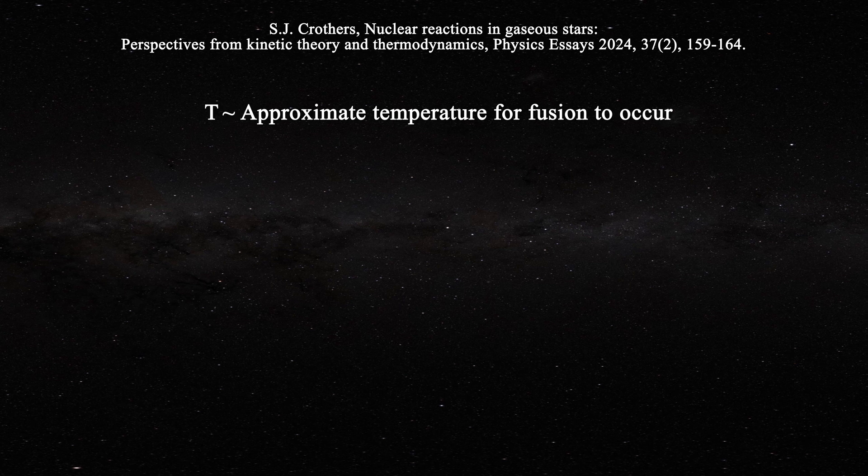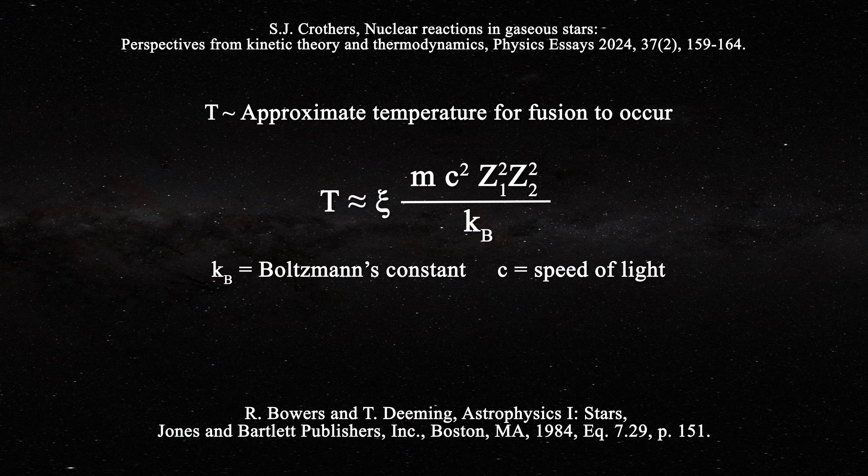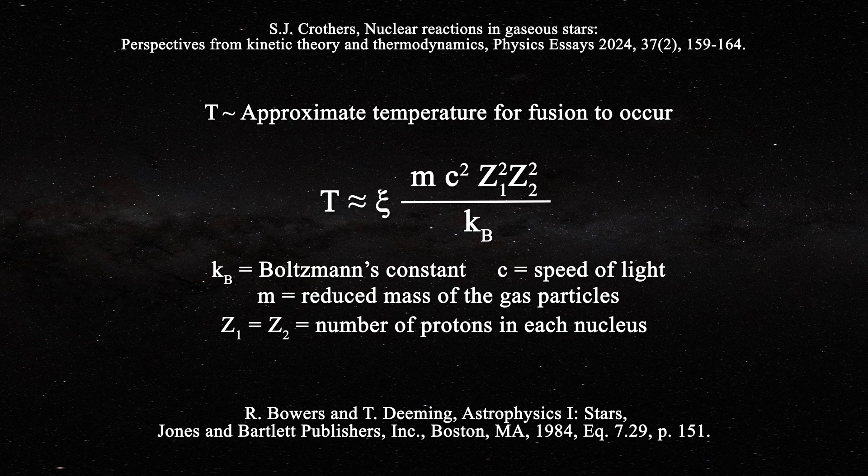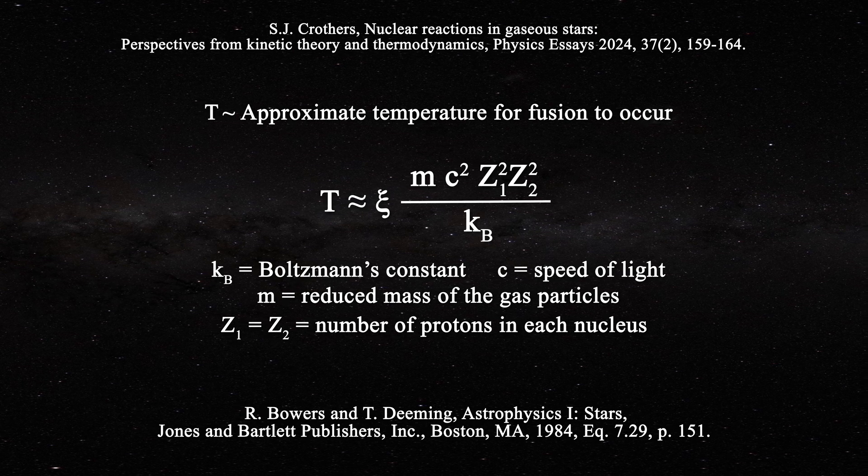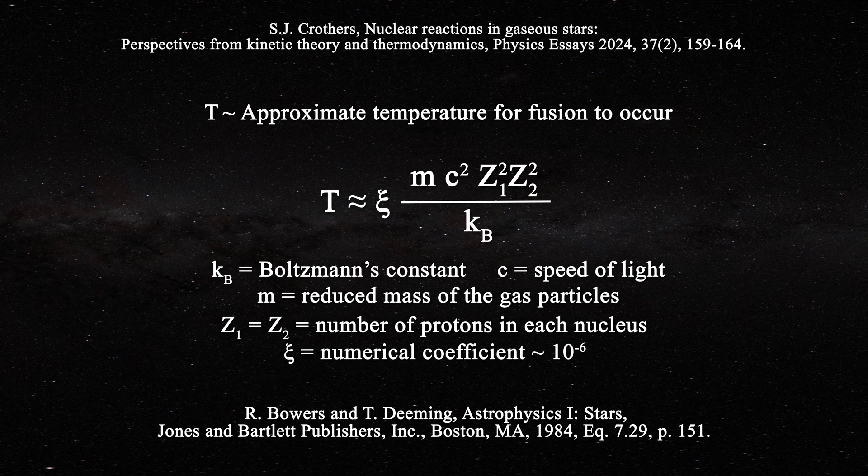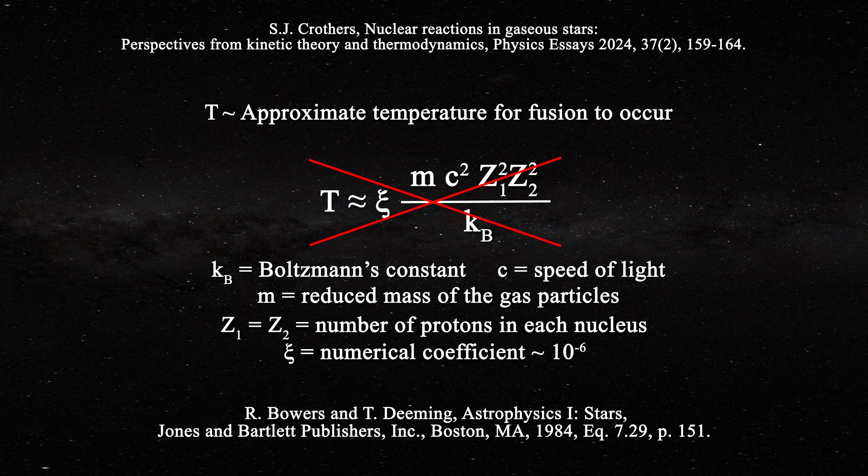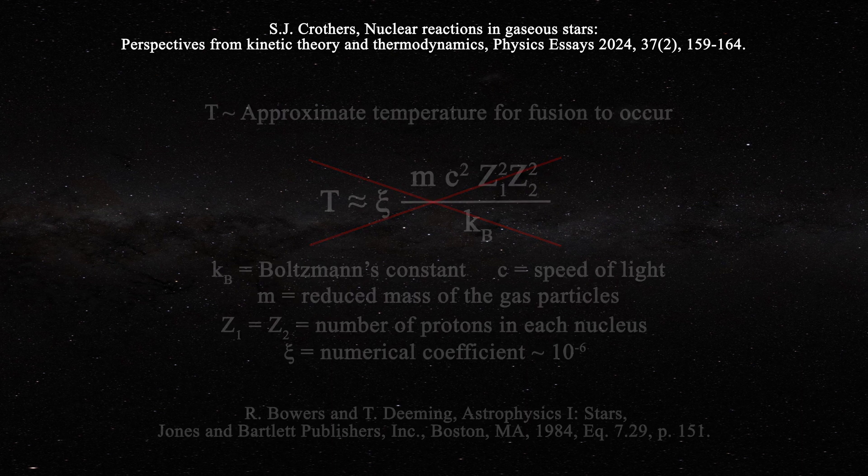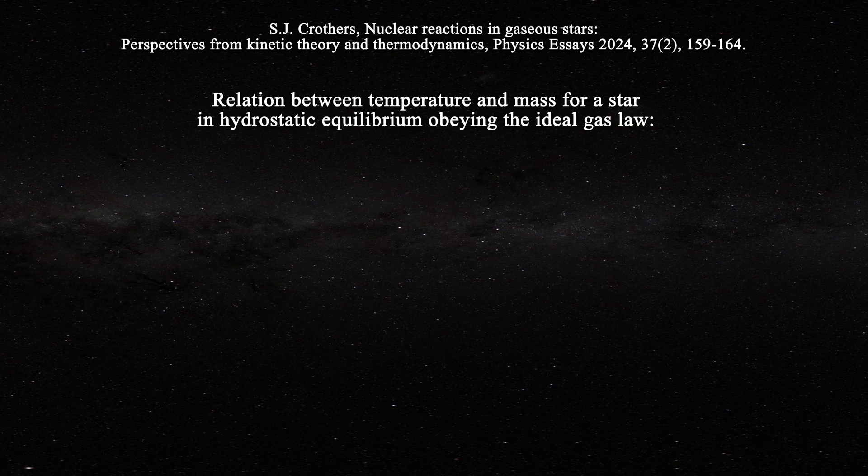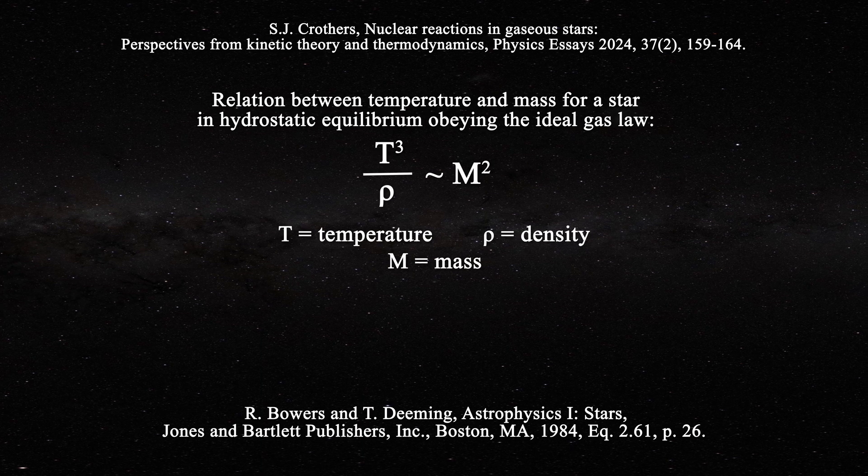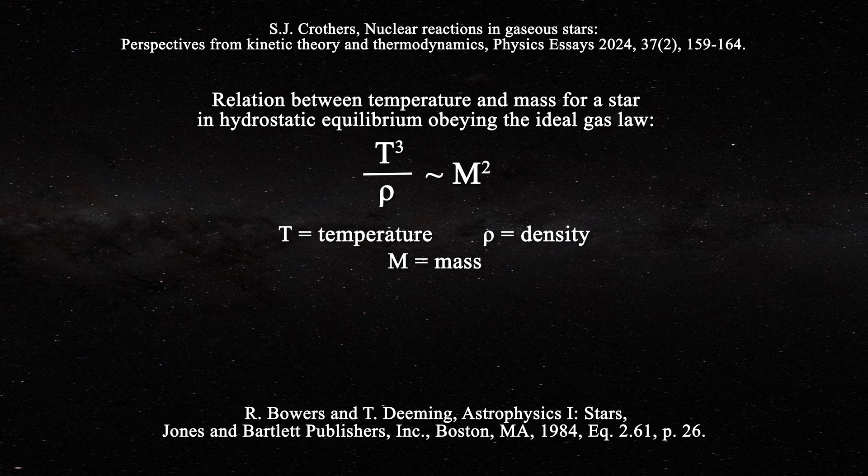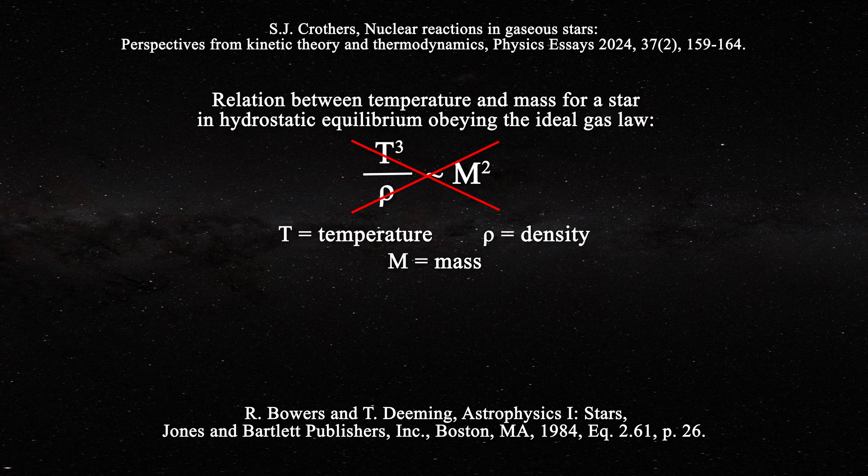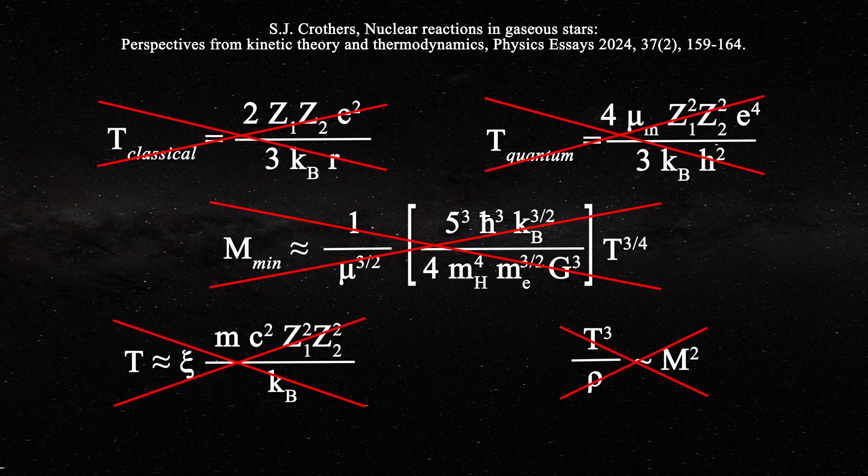Approximate temperatures at which nuclear reactions occur are asserted to be given by this expression, where m is the reduced mass of the gas particles, where z1 and z2 denote the number of protons in each nucleus respectively. The left side is intensive, while the right side is not intensive. Finally, the assumption that a star is in hydrostatic equilibrium and obeys the ideal gas equation leads to this relation between stellar central temperature and density. So one can see that all the key expressions predicting nuclear reactions in gaseous stars are thermodynamically invalid.